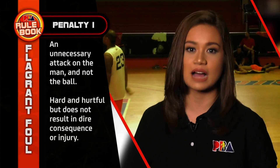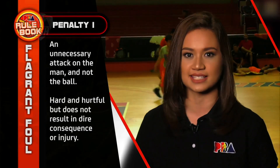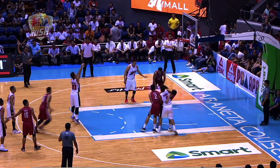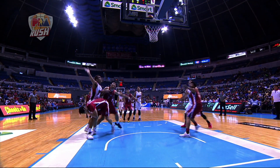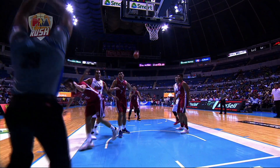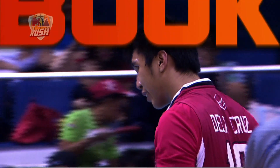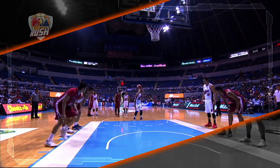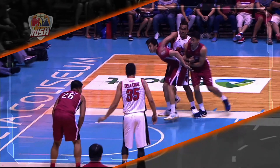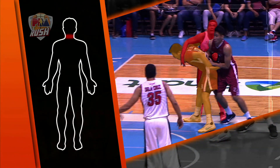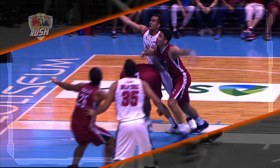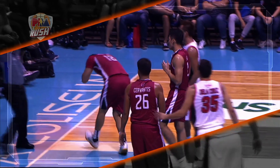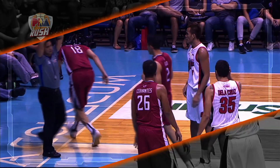Let's take a look at how a flagrant foul penalty one looks like and analyze it. Let's take a second look. As we can see, Vic Manuel fighting for position ends up landing a forearm on the neck area of Art De La Cruz. Though the foul does not cause any injury, the play still shows Vic Manuel unnecessarily hurting Art De La Cruz with a non-basketball move.